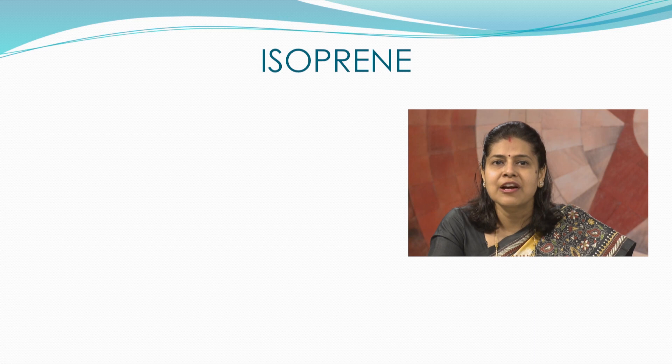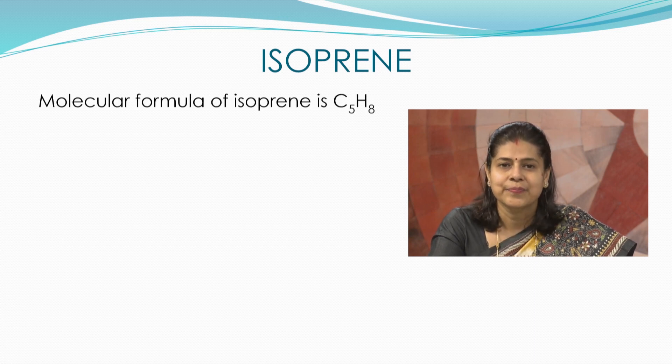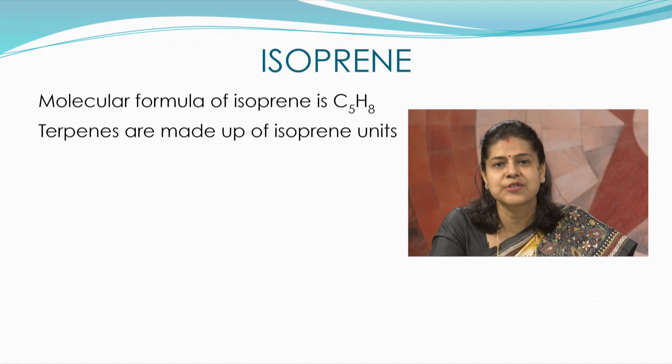As we have already discussed, terpenes are a diverse group of compounds. They have the formula C5H8, which is the molecular formula of an isoprene unit. Thus, we can say that terpenes are built up of isoprene units or are derivatives of them.